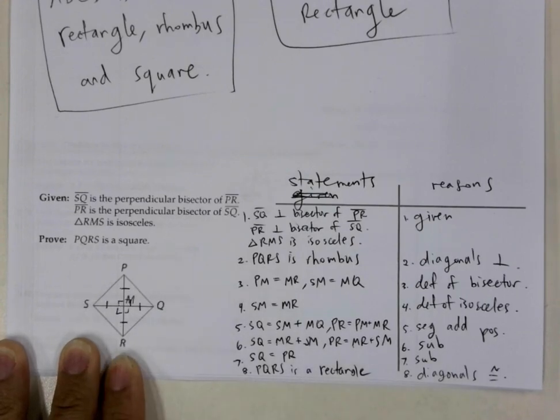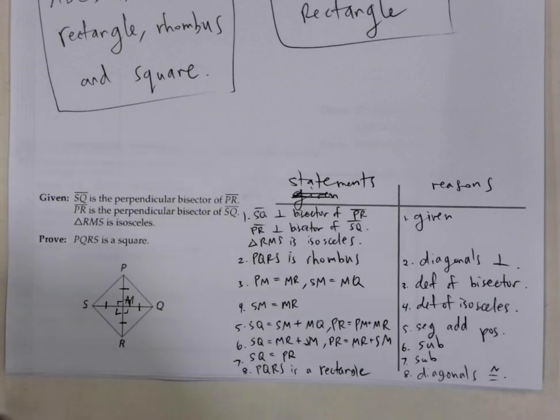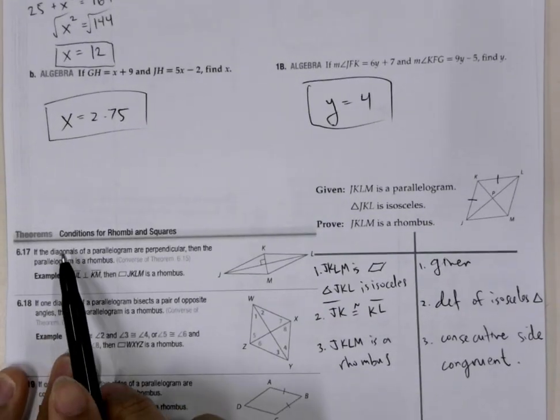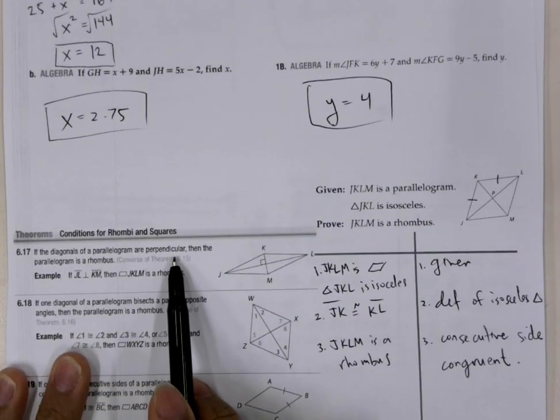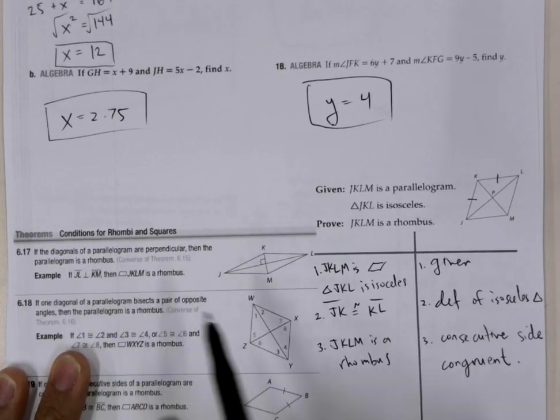Because first, we're going to show that it is a rhombus, and how do we show that it's a rhombus? By using the property, this property right here. Diagonals of a parallelogram are perpendicular, and it's a rhombus.